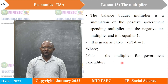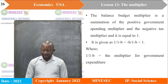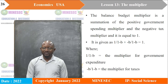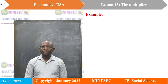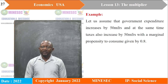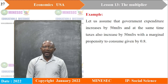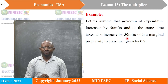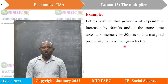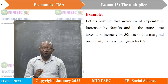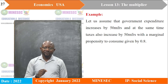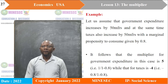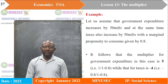Let us assume government expenditure increases by 50 million francs, and at the same time taxes also increase by 50 million francs, with MPC constant at 0.8. The multiplier for government expenditure is 5 — obtained from 1 divided by (1 minus 0.8) equals 5. A change in government expenditure of 50 million therefore leads to an increase in income of 250 million francs (5 × 50).